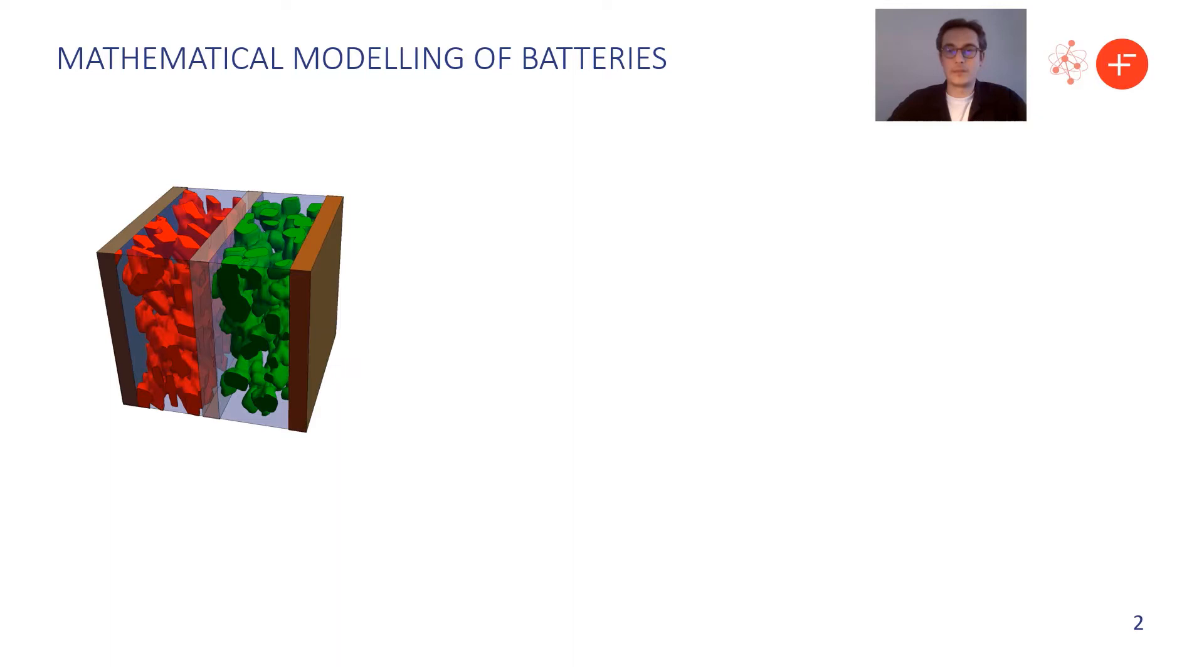So on the left here I've got a schematic of a single layer pouch cell. We've got a negative and a positive current collector, a separator in the middle, and two porous electrodes with some complicated microstructure.